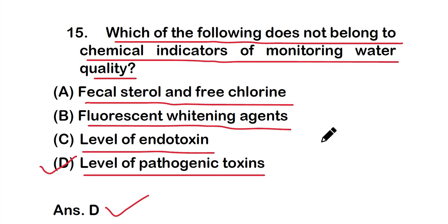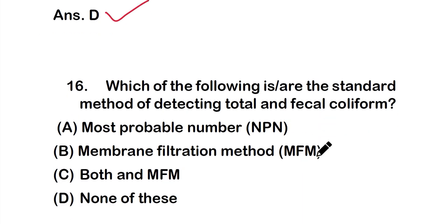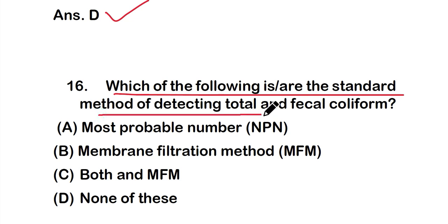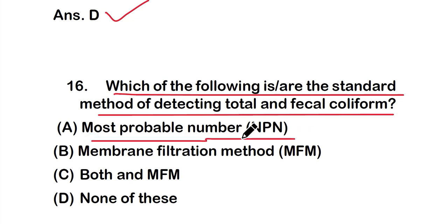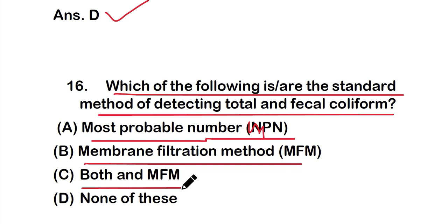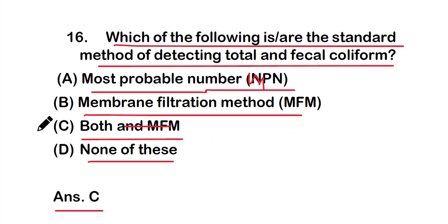Question sixteen: which of the following is or are the standard methods of detecting total and fecal coliform? Options: most probable number (MPN), membrane filtration (MF), both, or none. The right answer is option C — both MPN and membrane filtration methods can be used for detection of total and fecal coliform.